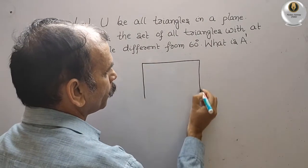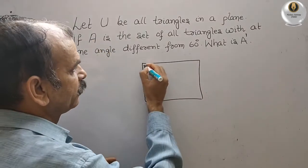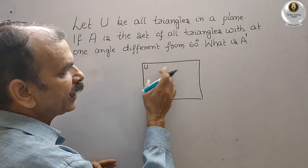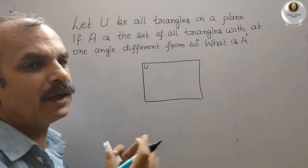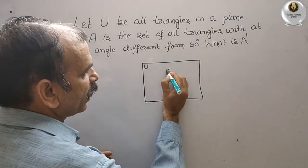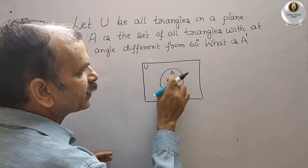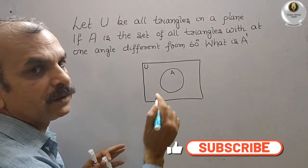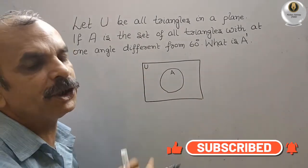This is your plane, so plane is nothing but your universal set. In the universal set they have given there are all triangles, all types of triangles we can see. Now they have given one set A, so set A is the triangles with at least one angle different from 60 degrees.